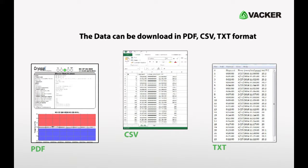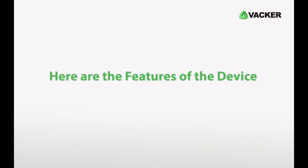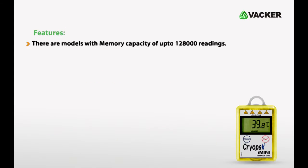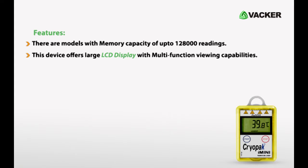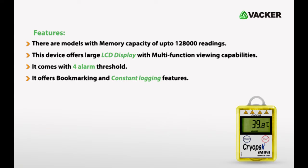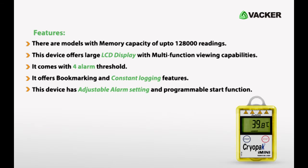The data can be downloaded in PDF, CSV, and TXT format. Here are the features of the device: there are models with a memory capacity of 128,000 readings. This device offers a large LCD display with multi-function viewing capabilities. It comes with four alarm thresholds and offers bookmarking and constant logging features. The device also has adjustable alarm settings and a programmable start function.